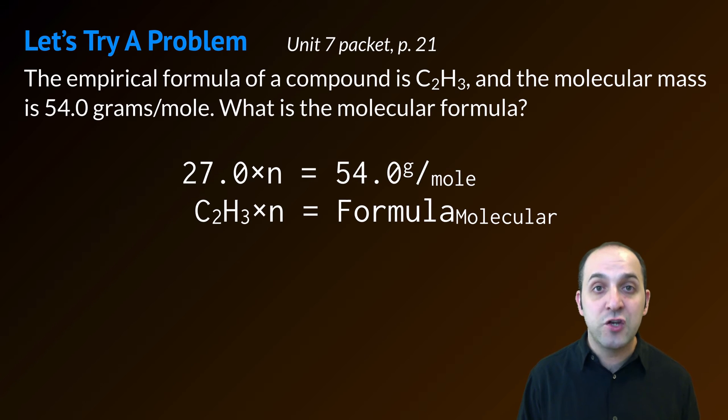If the empirical formula is C2H3, then its mass is going to be 27.0. Now that I know that, I should be able to figure out what n is. Dividing 54.0 by 27.0 gives me an n of 2.